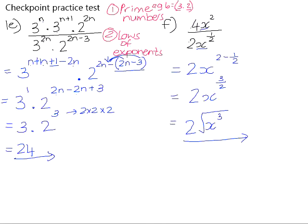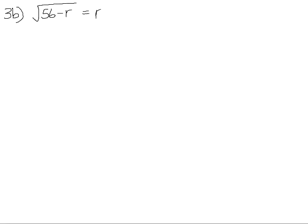The next one we'd like to have a look at is number 3b. Number 3b, you were asked to solve for the variable. So we want to solve for r. Our equation has a radical. So we need to solve this equation by squaring both sides. We first check that the surd is on its own on the left-hand side, which it is.